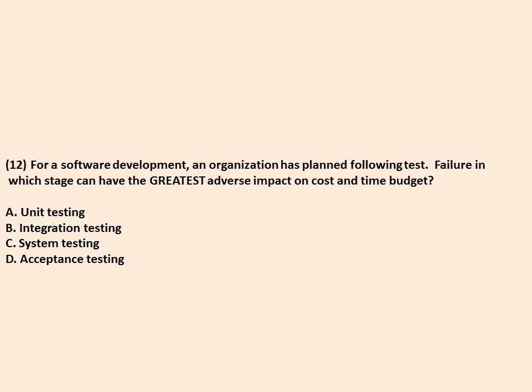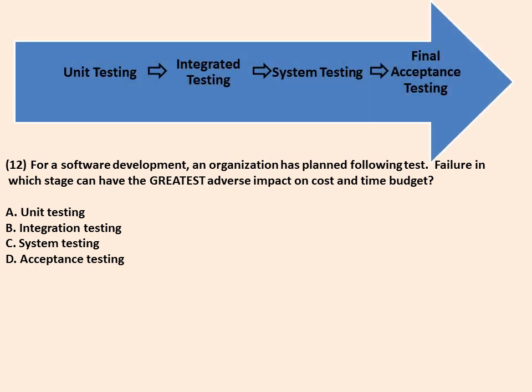For a software developer, an organization has planned tests across unit, integrated, system, and acceptance testing stages. The question asks which stage failure would have the greatest adverse impact on cost and time. The final stage — acceptance testing — will have a much greater impact on cost and budget.